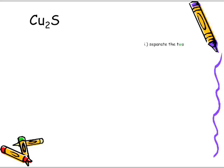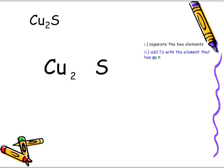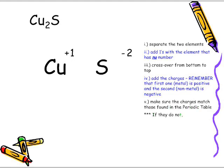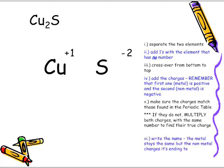Let's look at another example: Cu₂S. Same thing — we want to identify first metal and non-metal. Cu is the metal, S is the non-metal. Then we separate the two elements: Cu₂ and S. We add ones to the element that has no number. We cross over from the bottom to the top, then add the charges. The metal is positive, the non-metal is negative. Now let's make sure the charges match those found in the periodic table — and yes, they do.